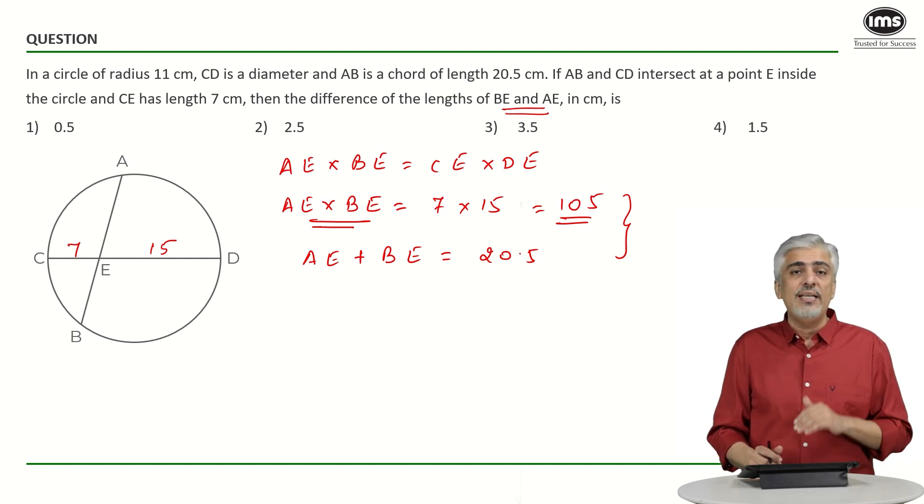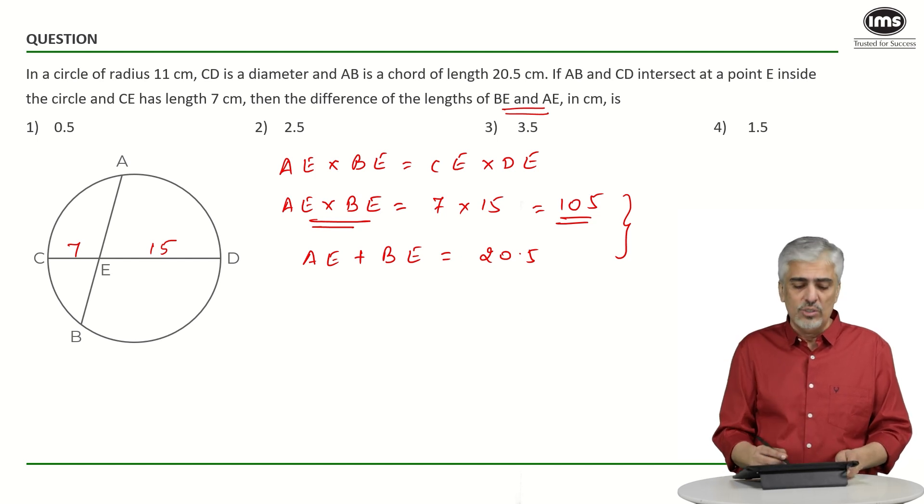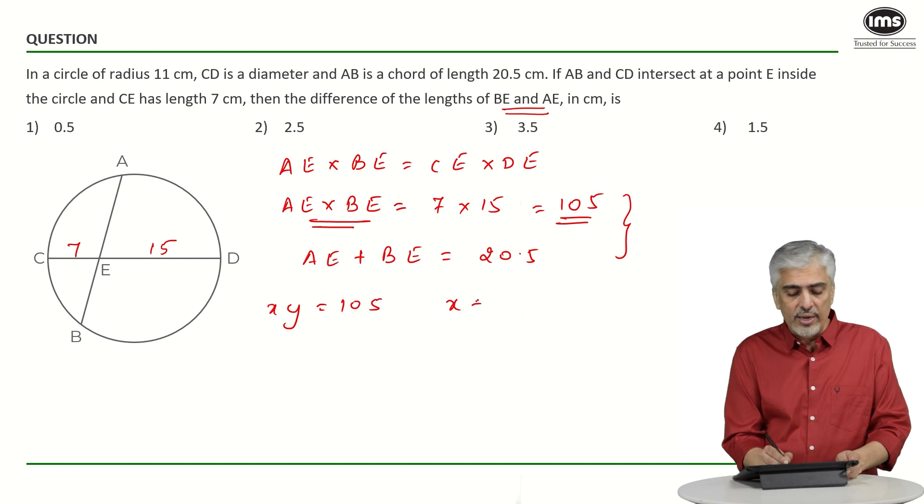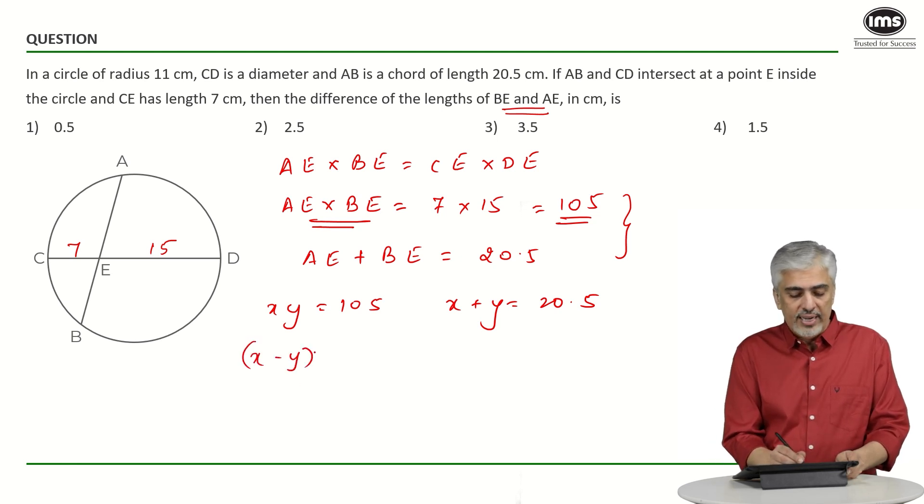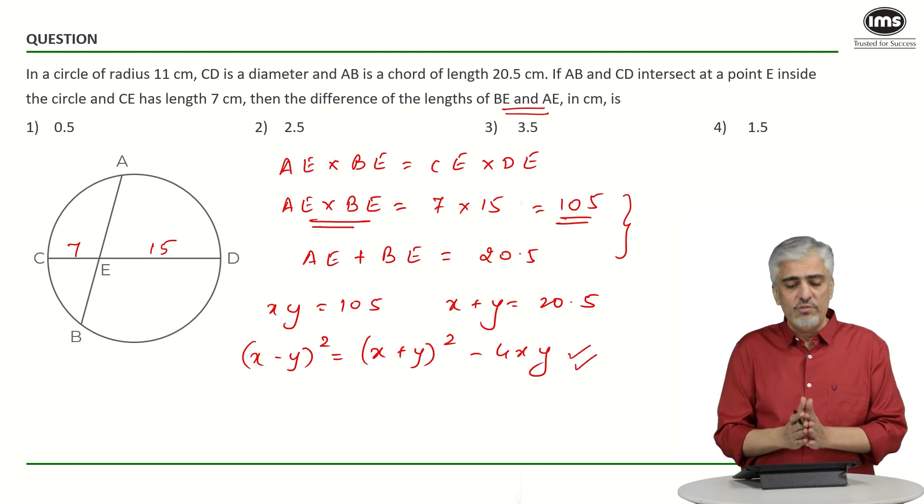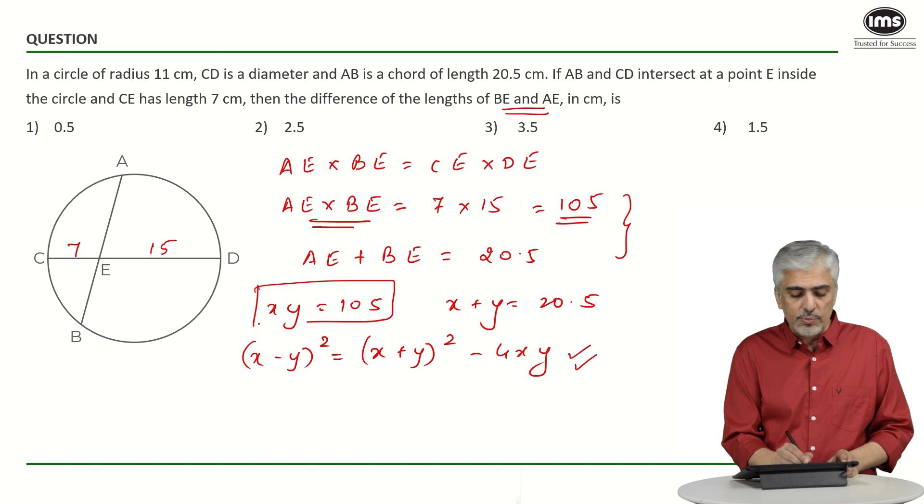Or you could use complete algebra. Take one as x and the other as y. You know xy is 105 and x plus y is 20.5, and you want to find x minus y. You could use algebra formulas: (x minus y) squared equals (x plus y) squared minus 4xy. I'm not using this; I've just given it as an option, because getting two numbers whose product is 105 and sum is 20.5 was very simple.